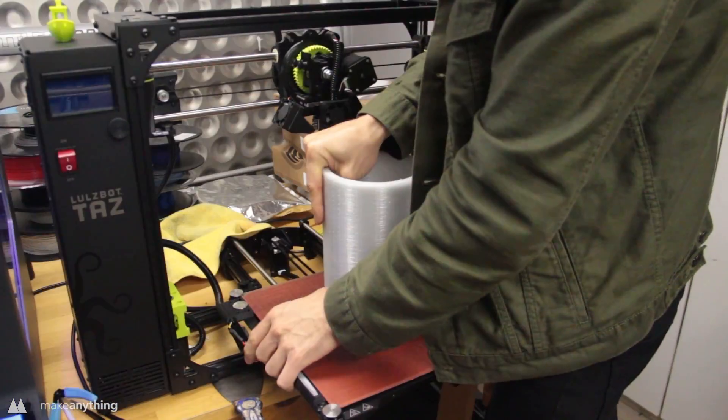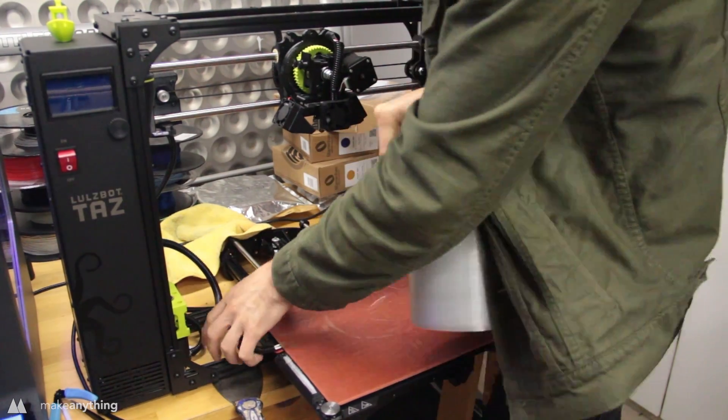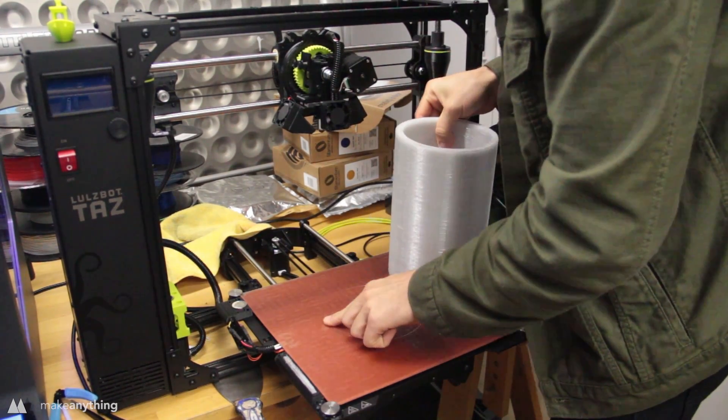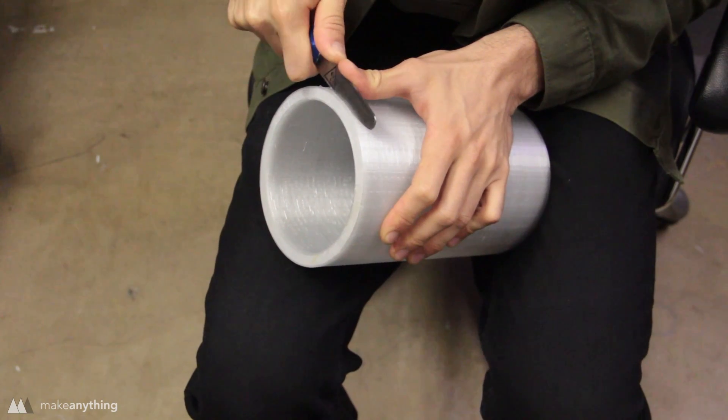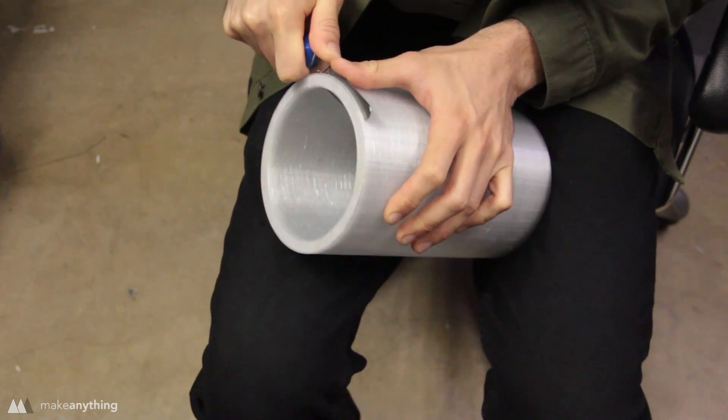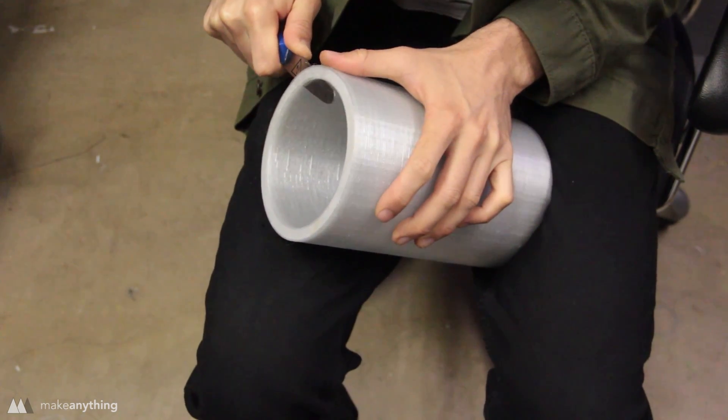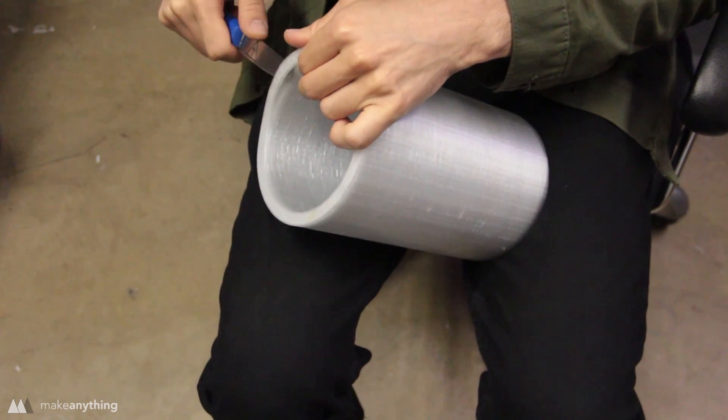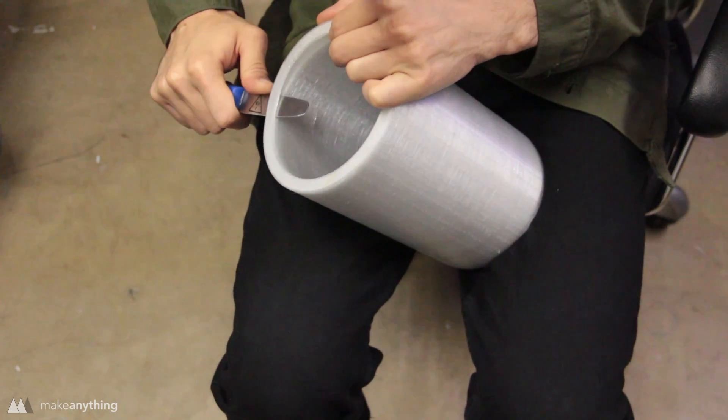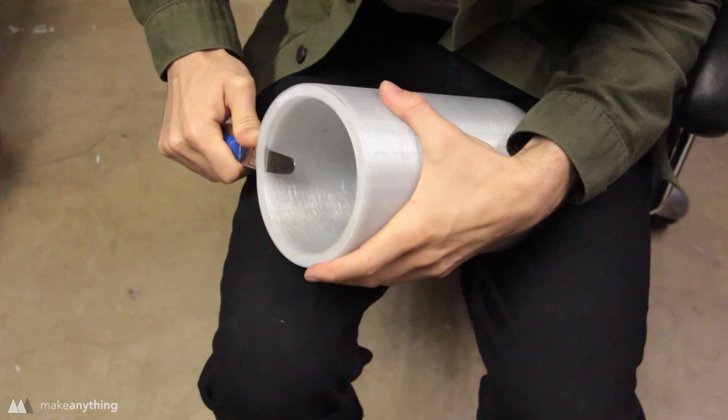Even after the build plate was completely cooled down, this was pretty tough to remove and it did leave a little bit of a defect on the PEI build surface, but it doesn't seem to have affected print quality afterwards. Then it's on to the laborious task of separating all those layers, which of course is magnified by the fact that this is a giant springo. It's a lot of work.